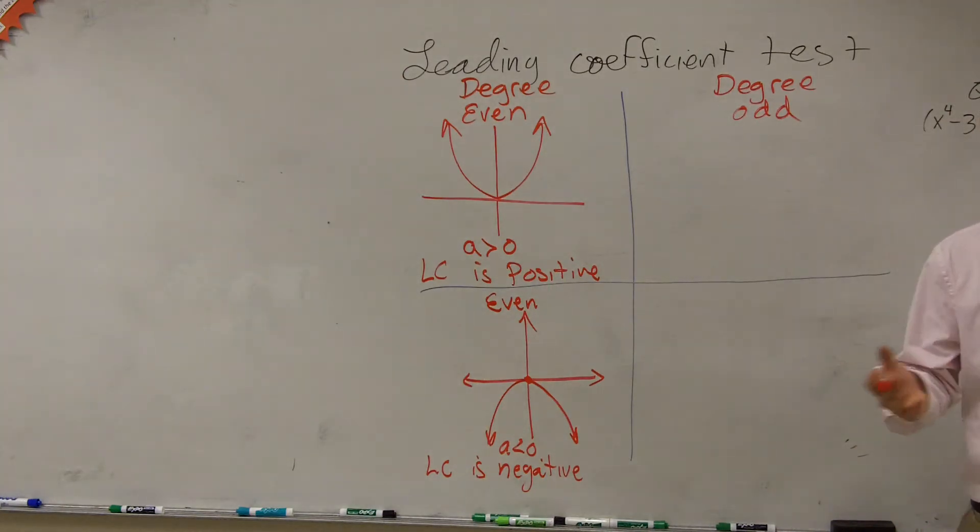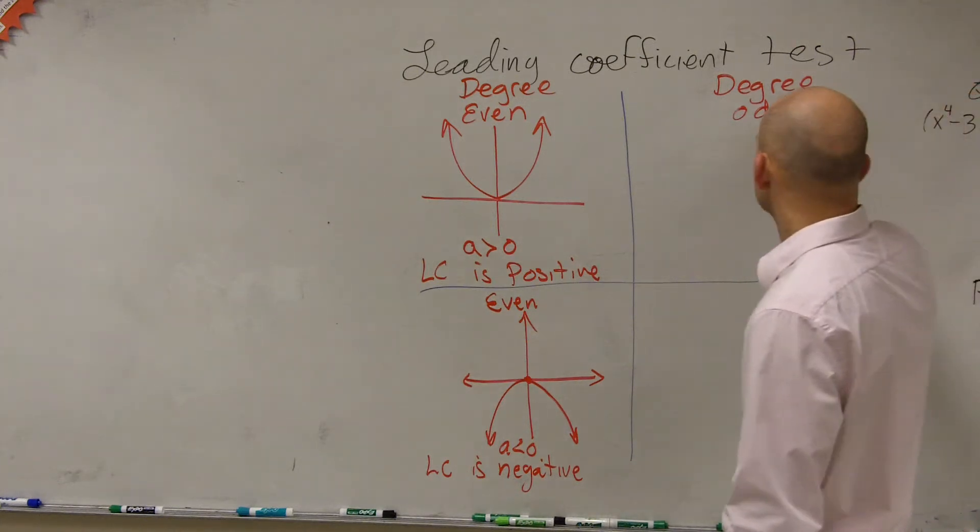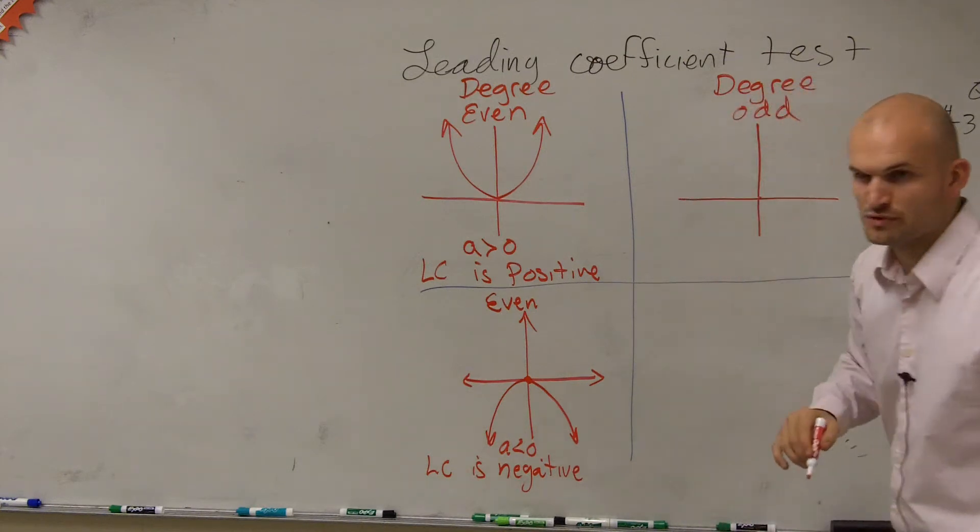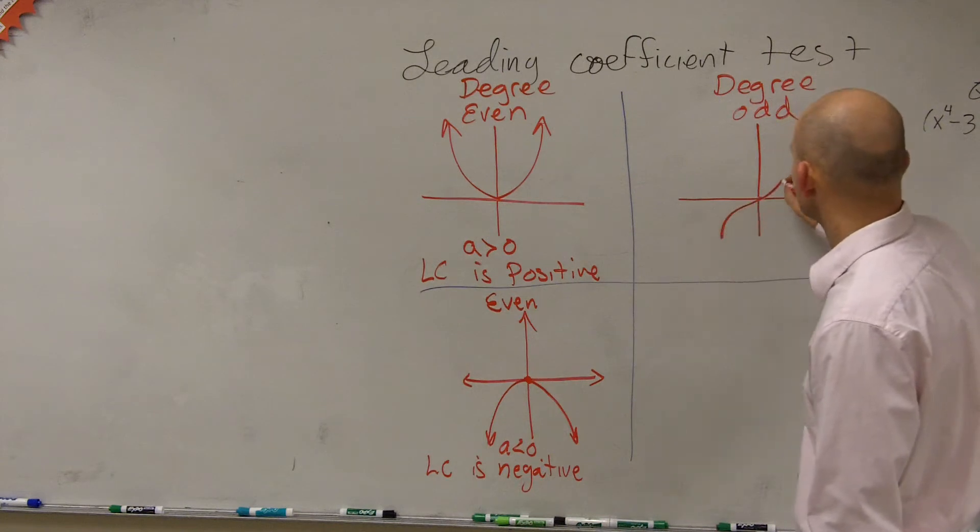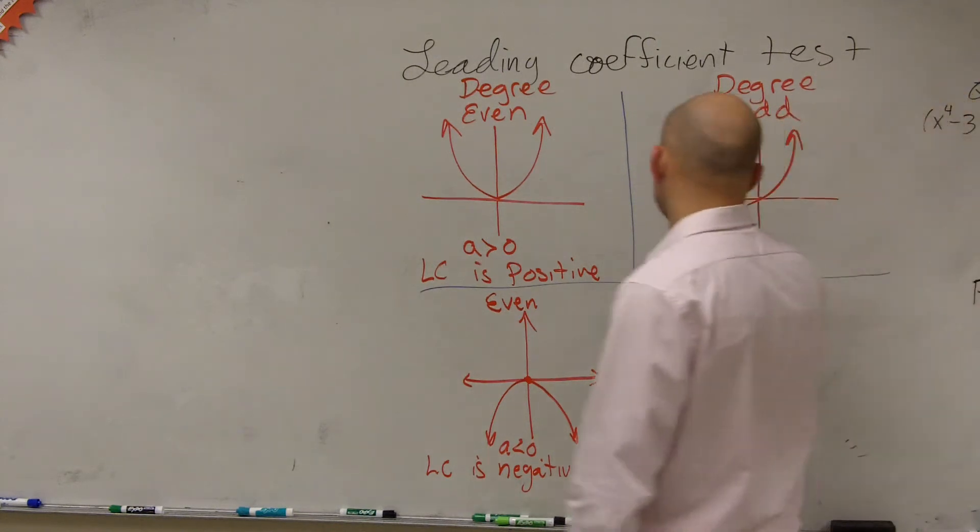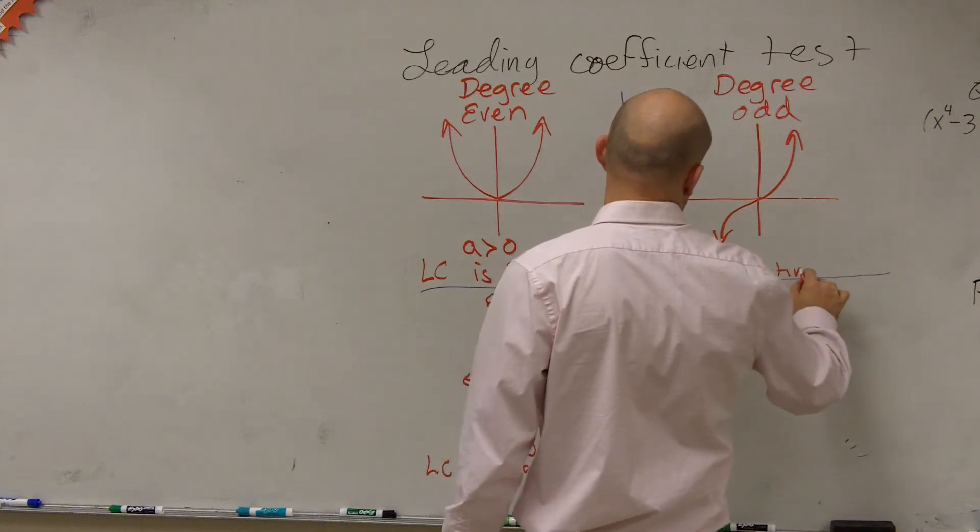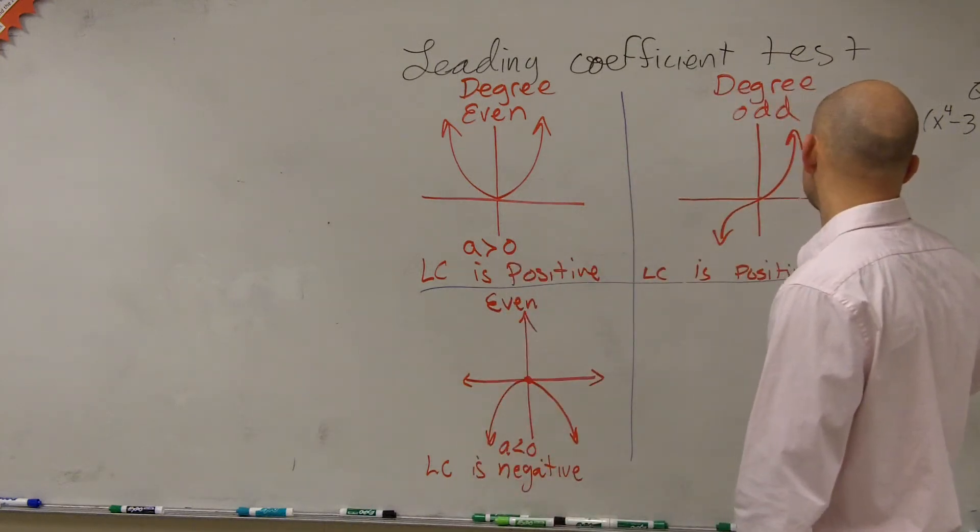So now let's look at when the degree is odd. When the degree is odd, let's take a look. We went over a couple examples, but one example that I'm going to use is the cubic. So when the graph is odd, a cubic function, which we haven't really talked about so much, takes on a shape like this. And it looks like that when we say our LC leading coefficient is positive, or a is greater than 0.